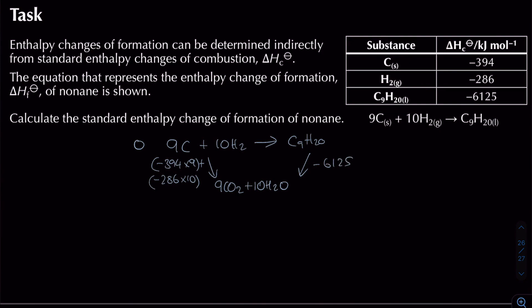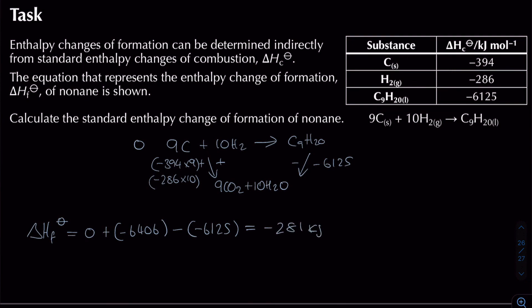For the products side: minus 6125. The enthalpy change of formation of nonane equals zero, plus minus 6406 (going along the arrow for reactants), minus minus 6125 (going against the arrow for products). The result is minus 281 kJ/mol. This negative value makes sense because enthalpy change of formation is normally negative — more bonds are formed than broken.